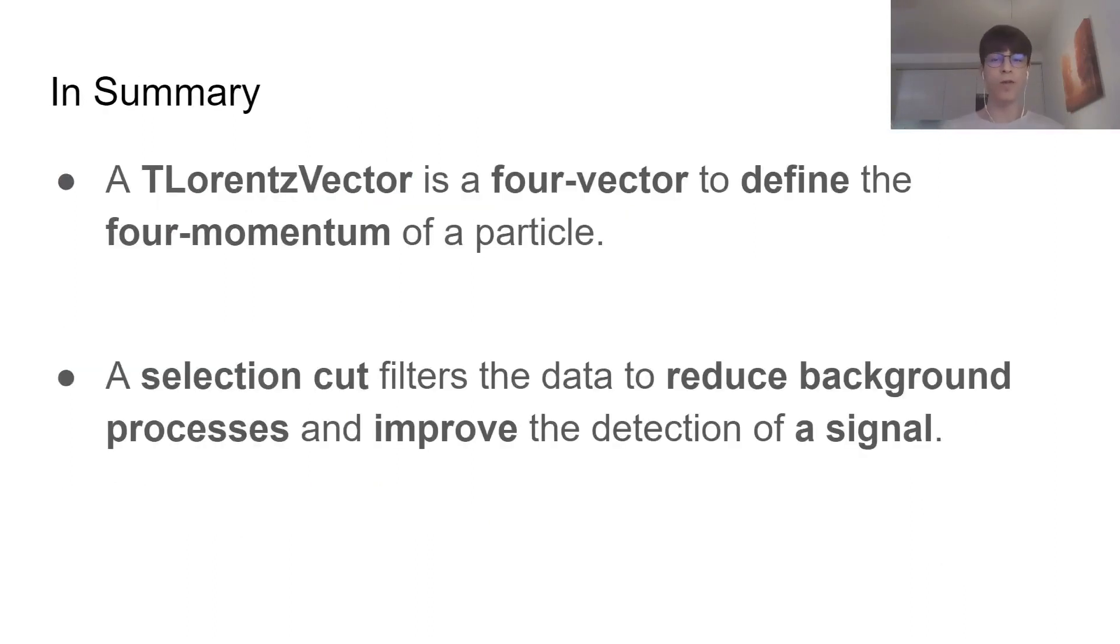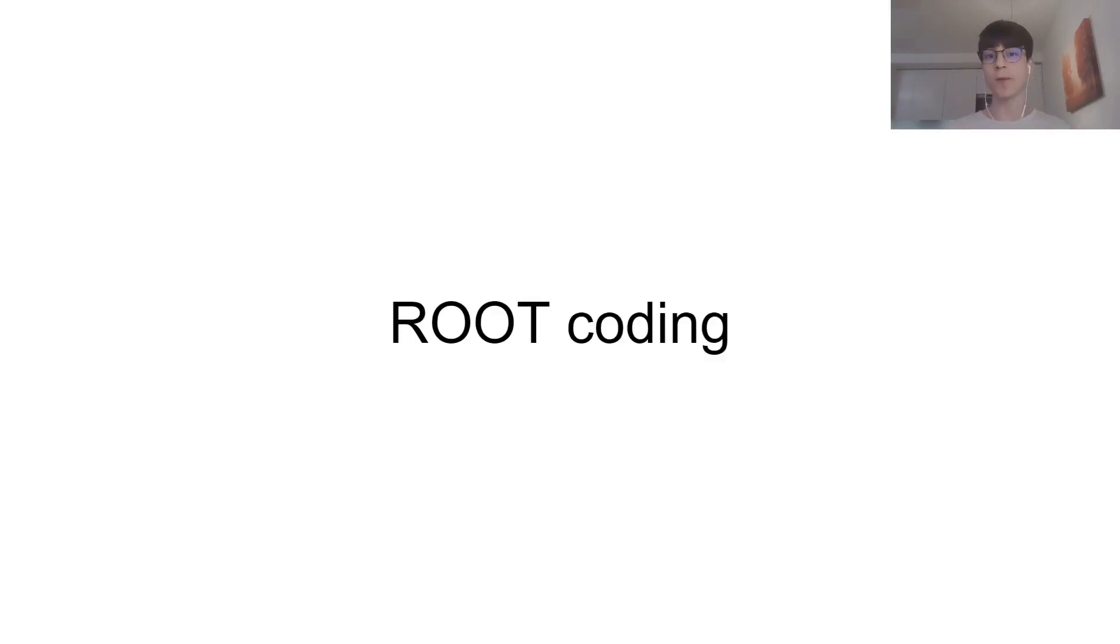In summary, a TLorentzVector is a four-vector that defines the four-momentum of a particle, and a selection cut filters the data to reduce background processes and improve the detection of a signal. Now, let's delve into our notebook.